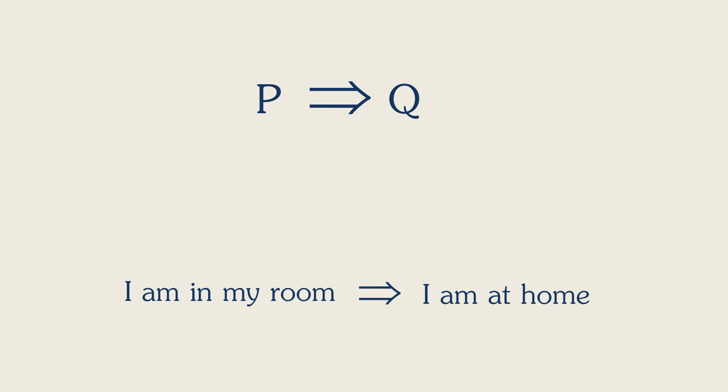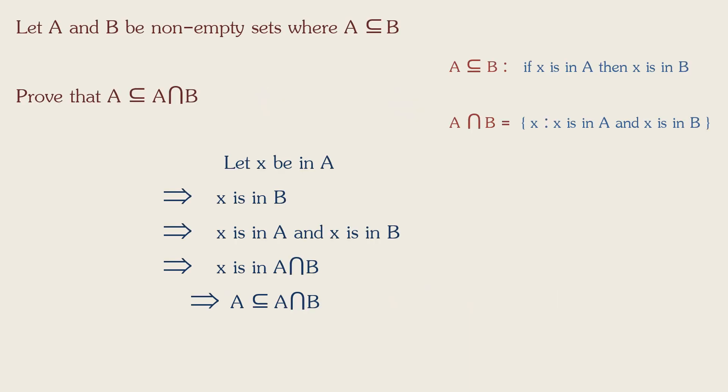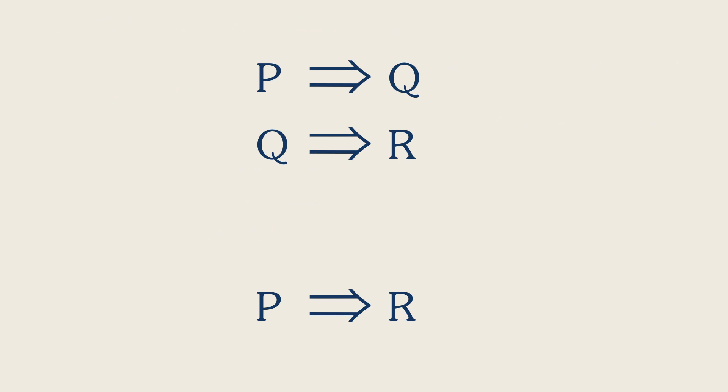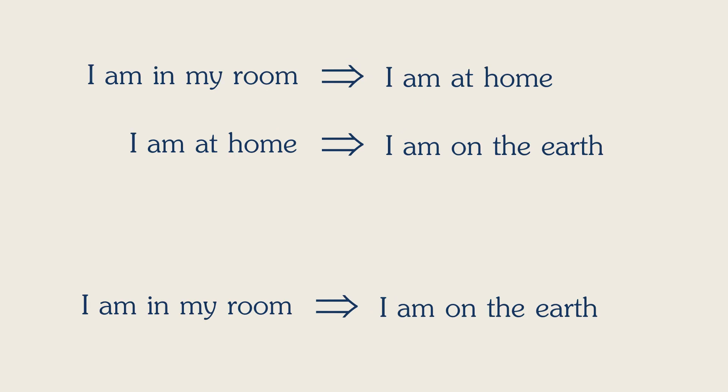And the property of this connective, when we can and hopefully will someday formally prove, is that if the first expression implies the second, and that one implies the third, and that one implies the fourth, and so on, then we have a chain of implications, and the first one implies the last one. So if you have P implies Q, and Q implies R, then that means that P implies R. That's called transitivity.